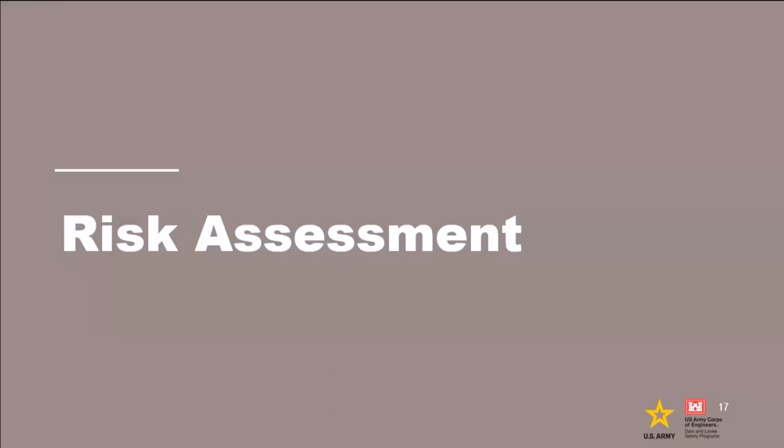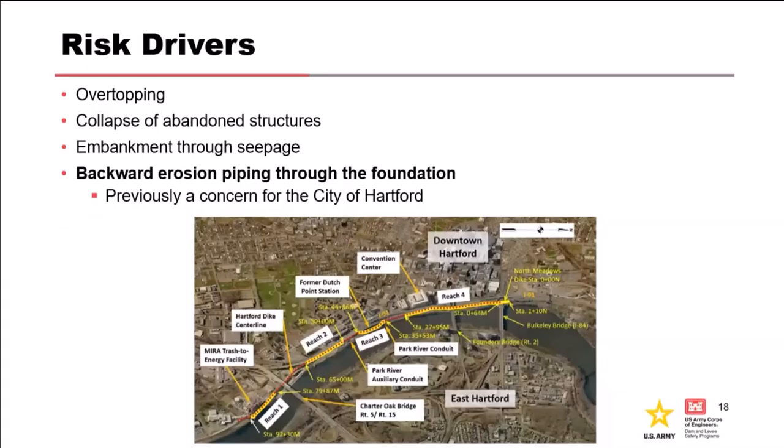Getting into the risk assessment — this will be an abbreviated look. The risk drivers for the Hartford levee were: overtopping, collapse of abandoned structures (that's where the penetrations list becomes really helpful, including structures adjacent to the levy that might create a void space at the toe), backward embankment through seepage, and backward erosion piping (BEP) through the foundation. The concern from the city about BEP through the foundation was what really initiated part of the risk assessment.